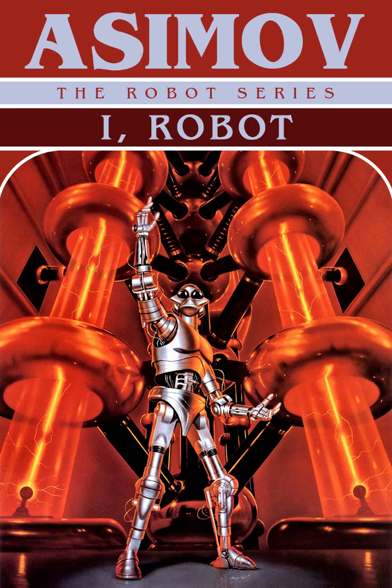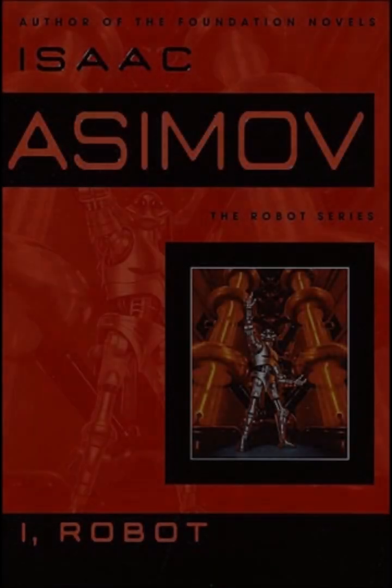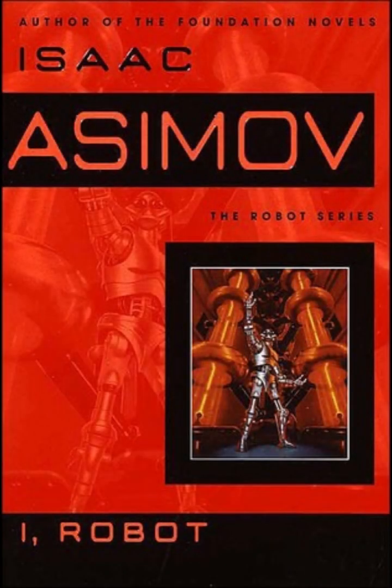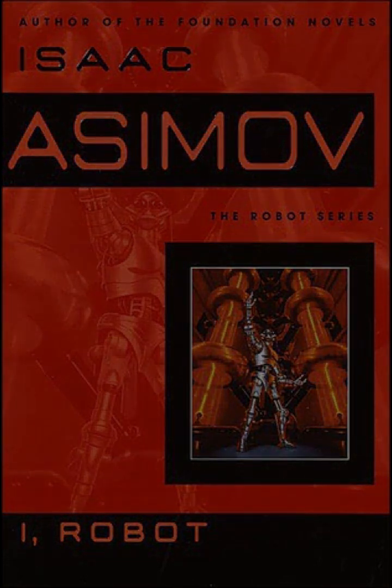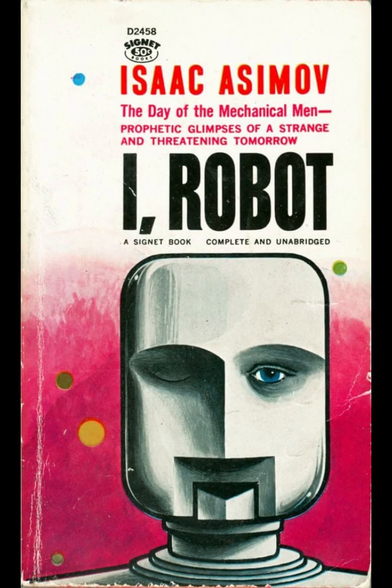Isaac Asimov's I, Robot is a seminal collection that not only set the framework for the science fiction genre but also introduced the world to his groundbreaking Three Laws of Robotics. Published in 1950, the book comprises a series of interconnected stories that explore the complexities and ethical dilemmas associated with artificial intelligence. Through these narratives, Asimov delves into themes of humanity, morality, and the relationship between creator and creation.